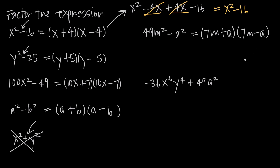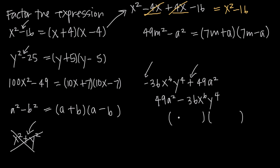Here we have negative 36x to the sixth power times y to the fourth power plus 49a squared. You might think this isn't the difference of two squares because we have an addition sign in the middle. But notice we also have a negative sign out in front of the 36, which means we can flip the order of the terms. This is a positive 49a squared and a negative 36x to the sixth y to the fourth, so now we have the difference between two perfect squares. The square root of 49 is 7, the square root of a squared is a, the square root of 36 is 6, the square root of x to the sixth is x cubed, and the square root of y to the fourth is y squared. We add one and subtract the other. And that's how you factor the difference of two squares.